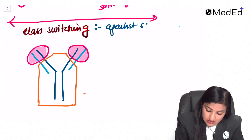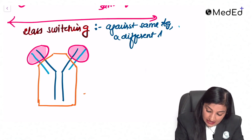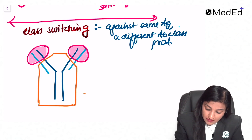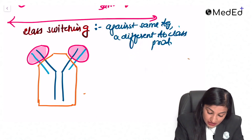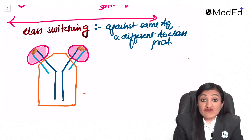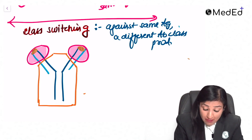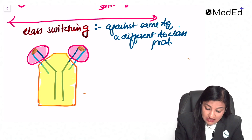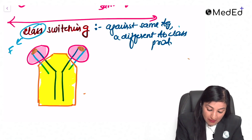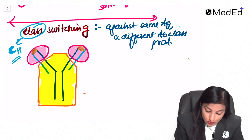Class switching means that against the same antigen, a different antibody class is produced. The antigen binds here — we are not disturbing the antigen-binding part, which remains unchanged. The class is determined by the FC region, that is, the constant part of the heavy chain. Class switching occurs in the constant part — the yellow-shaded region.